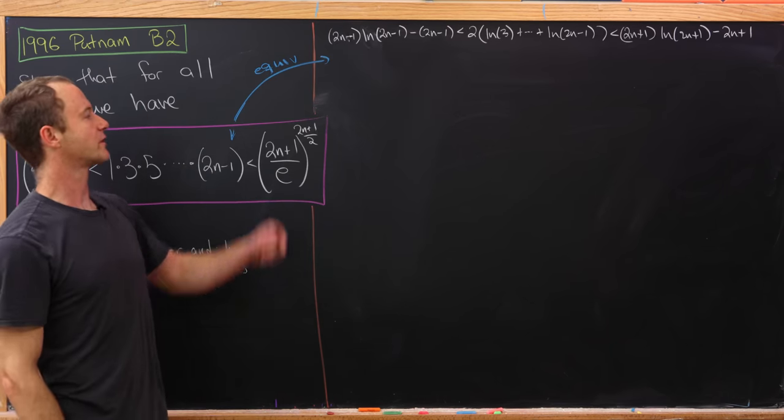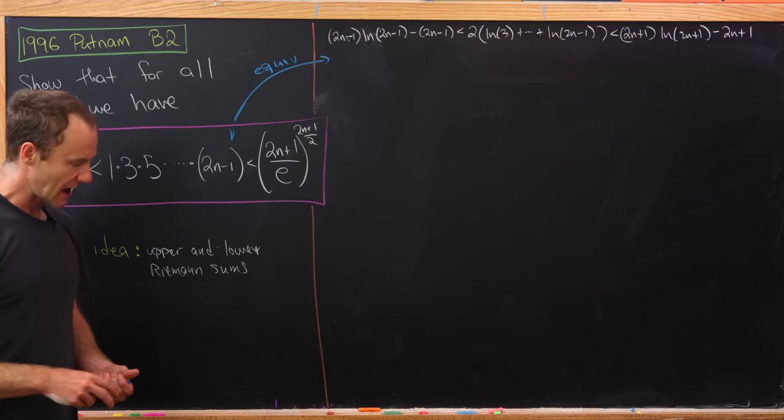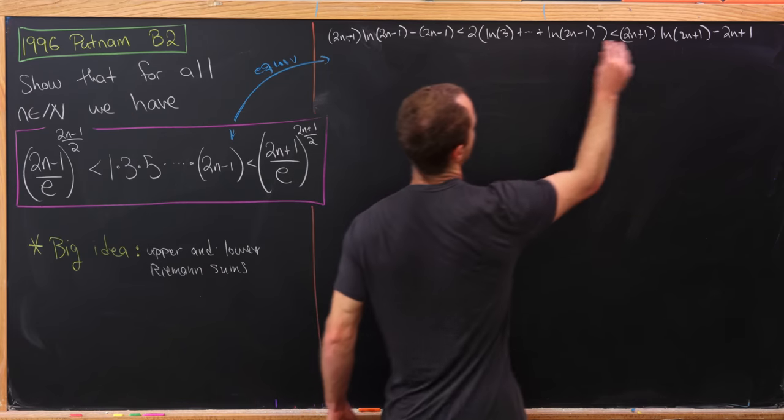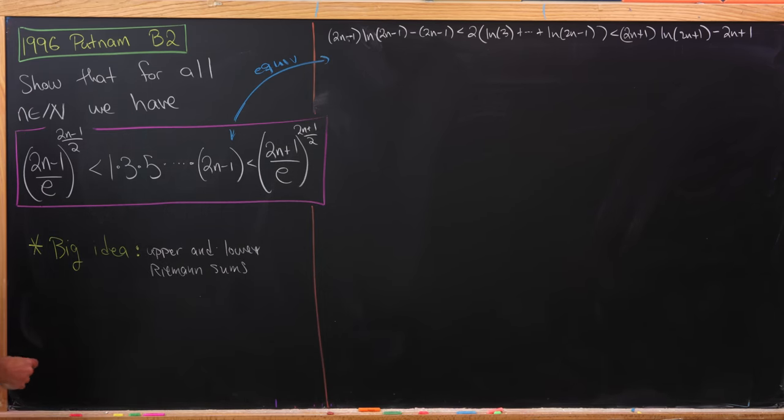Okay, so there we have it, a rewritten version of an inequality which is equivalent to the one that we want. But now I'd like to look at these things that are flanking either side of it, and notice they're both of the following form.